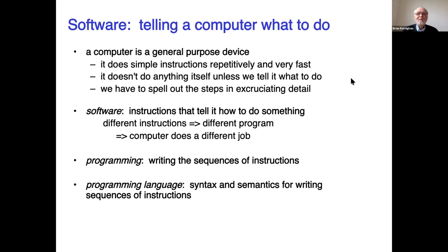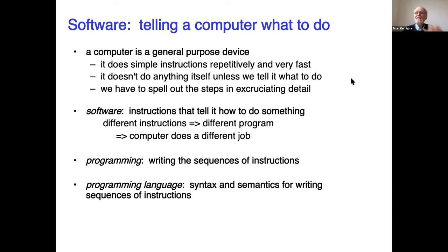Software is how you tell a computer what to do. Computers are general purpose devices — they do very simple instructions: add, subtract, put stuff in memory, take it out again. They do it very, very fast, but they don't do anything until we tell them what to do, and we have to spell that out in painful detail. So software is just the instructions that tell a computer how to do something. With the von Neumann model — instructions and data in the same memory — if you put different instructions into the memory, that's a different program, and the computer does a different job. That's the reason why my computer can be running Zoom so that we can talk, but it could also be playing a game in the background and listening for mail to arrive — just different instructions in the memory.